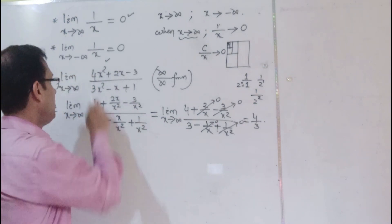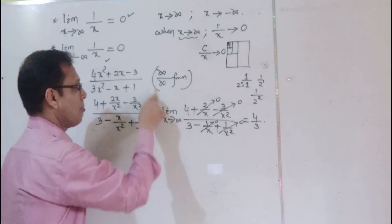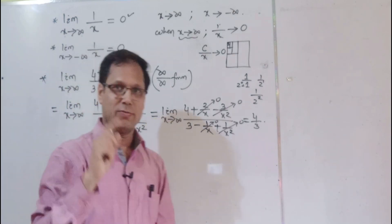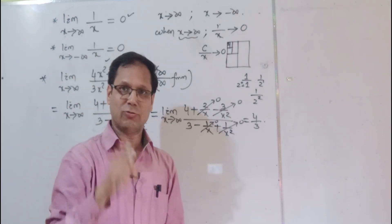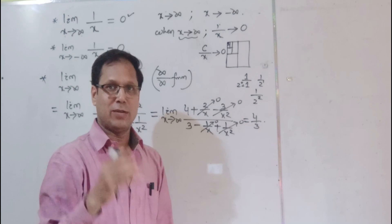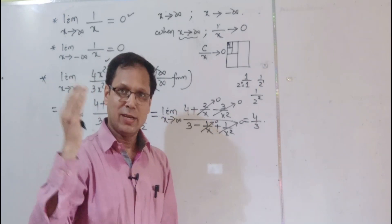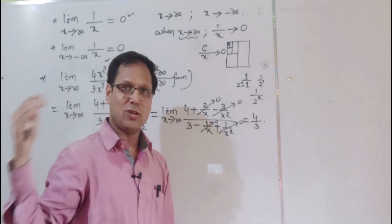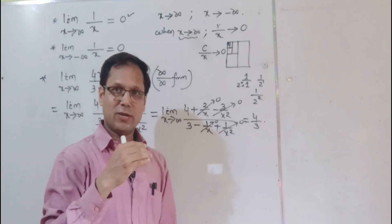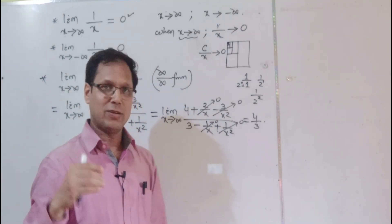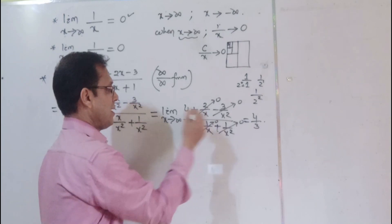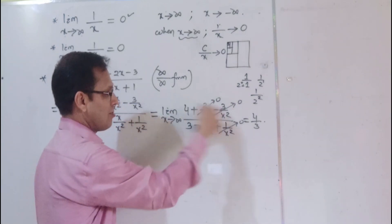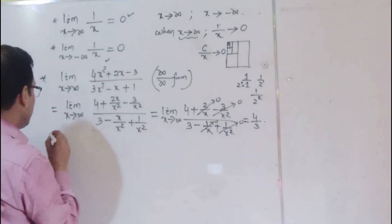Okay, so for the infinity by infinity form, what is the first step? Find the highest degree in the numerator and denominator, then divide by that highest power of x. As x tends to infinity, the remaining terms tend to 0, and you get your answer.